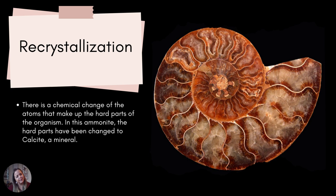Recrystallization is similar but a little different. With recrystallization, the chemical composition is already there — the makeup of the specimen is already there and it's just being recrystallized. With this ammonite, for example, it is made of calcium carbonate, which is the main component in calcite. Under certain conditions, buried at depth, the calcite can recrystallize and the entire specimen is now calcite with no more shell leftover.